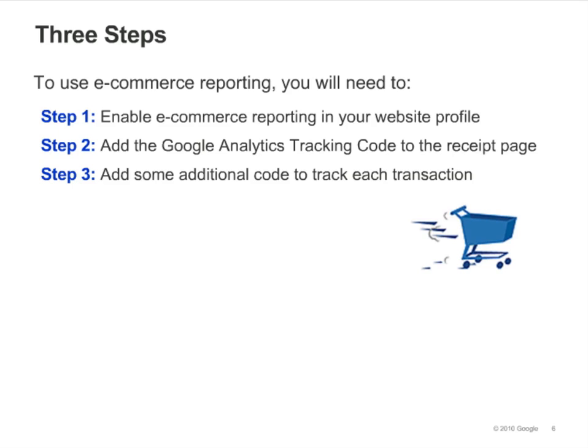In order to use eCommerce reporting, you'll need to do three things. First, enable eCommerce reporting within your Analytics website profile. Second, add — or make sure that you've added — the Google Analytics tracking code to your receipt page or transaction complete page. Finally, you'll need to add some additional eCommerce tracking code to your receipt page so that you can capture the details of each transaction.